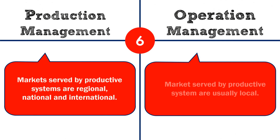Our sixth difference: in production management, the markets served by productive systems are regional, national, and international, whereas in operation management, the markets served by the productive system are usually local.